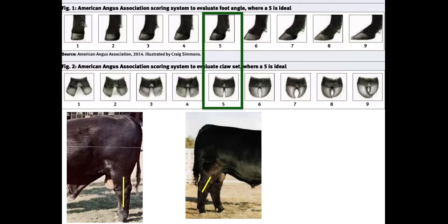Animals with poor foot structure at the extreme end of the scale often also get very straight in their hock — what we call straight-legged or post-legged. That's not good because when the bull breeds, all of his weight shifts back to those rear legs. If he's too straight in the hock, those hocks get sore and he won't want to breed cows. We're looking for a little bit of angle in the hock, with the leg straight but with some flex. Sickle hock — where the leg curves back — is also undesirable; we want a straight leg with some natural flex.